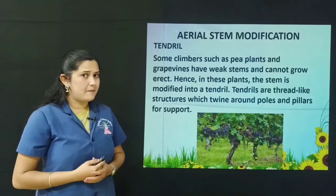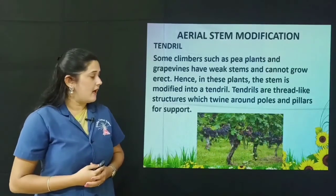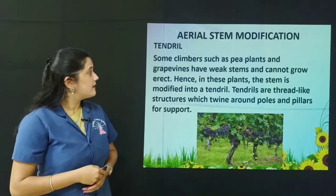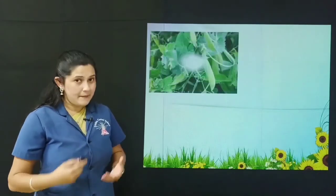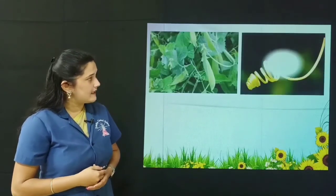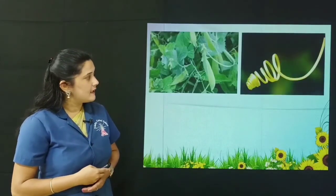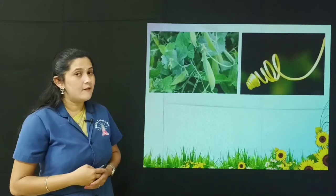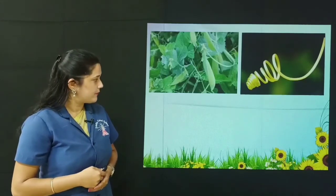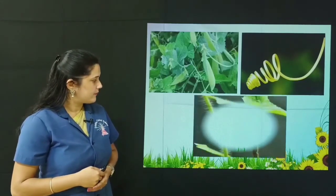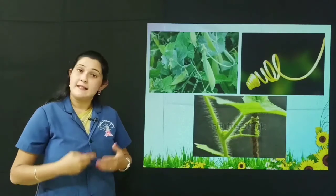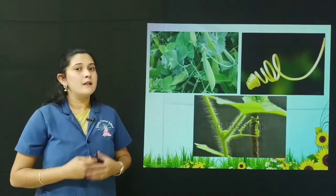Other examples of tendrils are grapevines and tea plants. You can see the thread-like structures which help them support themselves.